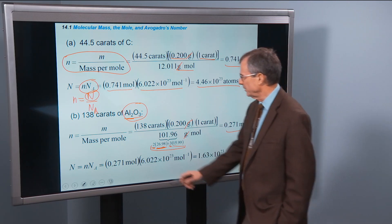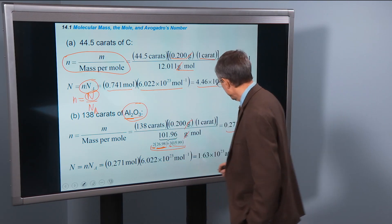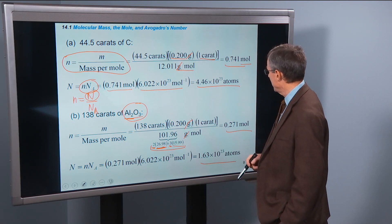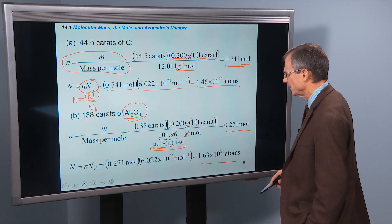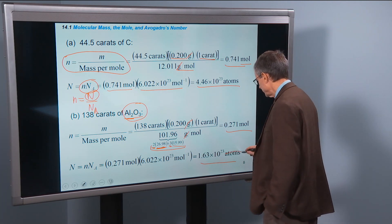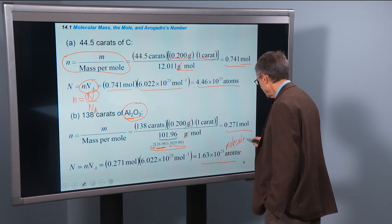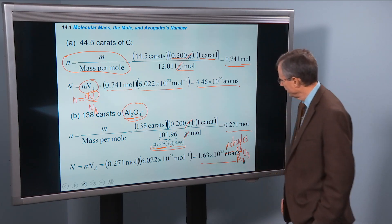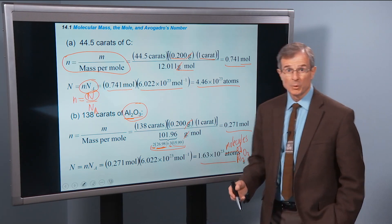Then we do the same trick as we did before to find the number of atoms. It's not actually atoms here, it's molecules of Al2O3. It's particles, number of particles.